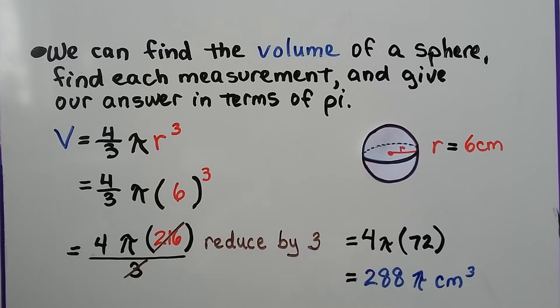3 goes into 216, 72 times. Now we have 4 pi times 72, which on our calculators comes out to 288 pi centimeters cubed. And we're done, because we're putting our answer in terms of pi.